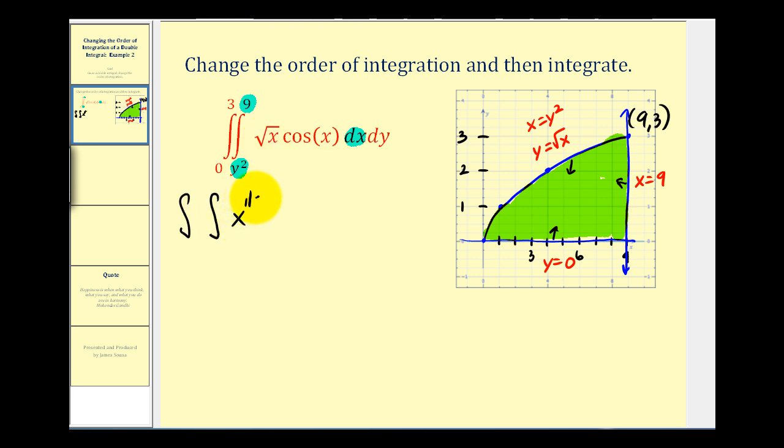Right, this is x to the one-half, cosine x. And now we'll switch it from dx dy to dy dx. So because we're integrating with respect to y first, our lower limit of integration will be y equals zero. And the upper limit of integration would be this curve, but it must be a function of x. So we're going to use the square root of x. And then the limit of integration for x will be from zero all the way to nine.